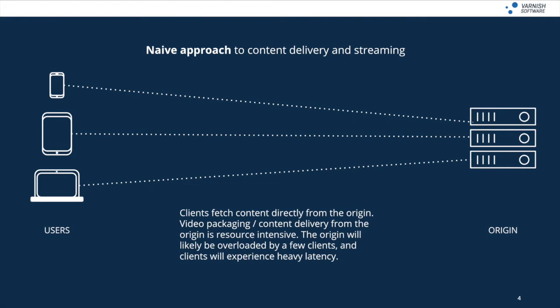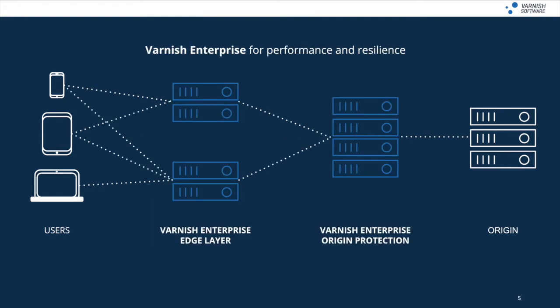To give a taste of what Varnish Enterprise does differently, we can see a diagram which shows how it solves the problem. In this instance, it's using a two-layered approach for both edge caching and origin protection. It's about delivering content quickly and protecting origin servers. Varnish Enterprise acts as an origin shield, protecting the back-end from being overloaded by too many requests and actually dealing with those requests itself, while the edge caching components move content much closer to the user so it's much quicker to serve the content they request.